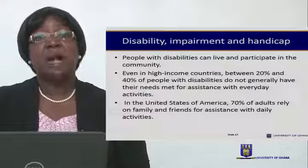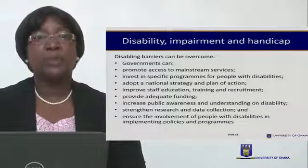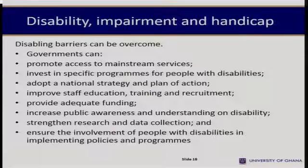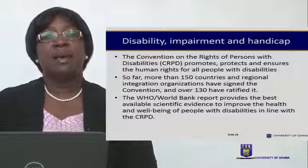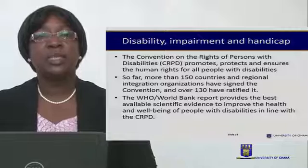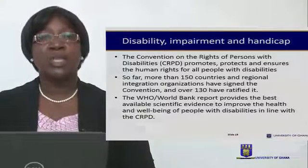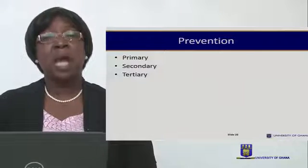In the United States, 70% of adults with disabilities have had to rely on families and friends for assistance with activities of daily living, and some do not even have access to this assistance. Governments should be committed to helping people with disability function in their communities by promoting access to services and providing adequate funding. The Convention on the Rights of Persons with Disability protects, promotes, and ensures human rights for all people with disabilities.